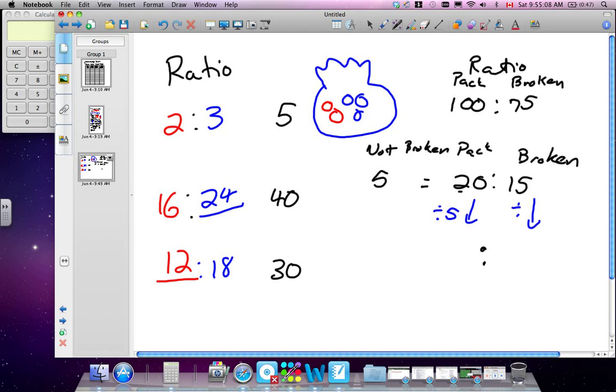So, if we divide both of them again by 5, that'll be 4 of 3. That's right. And there we go. There's our unit ratio. Our unit ratio is 4 to 3. So, every pack of 4, 3 are going to be broken. So, that means in a pack of 4, how many are not going to be broken?